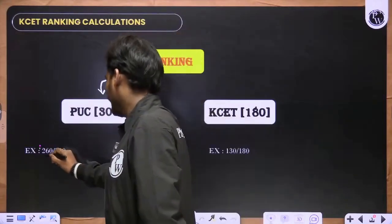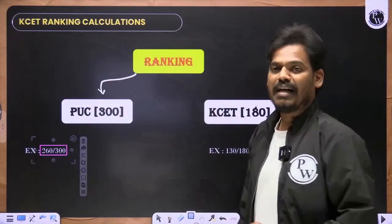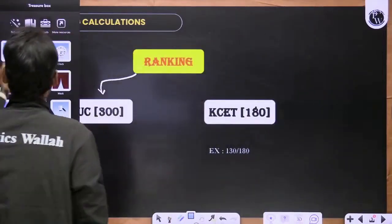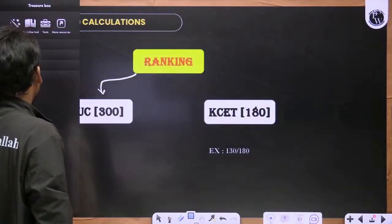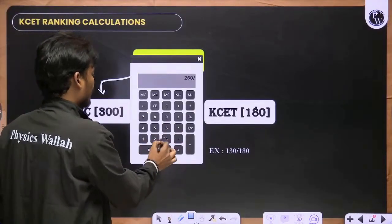This is the example: out of 300, you got 260 marks. What is the percentage of this? Can you tell me? 260 divided by 300.